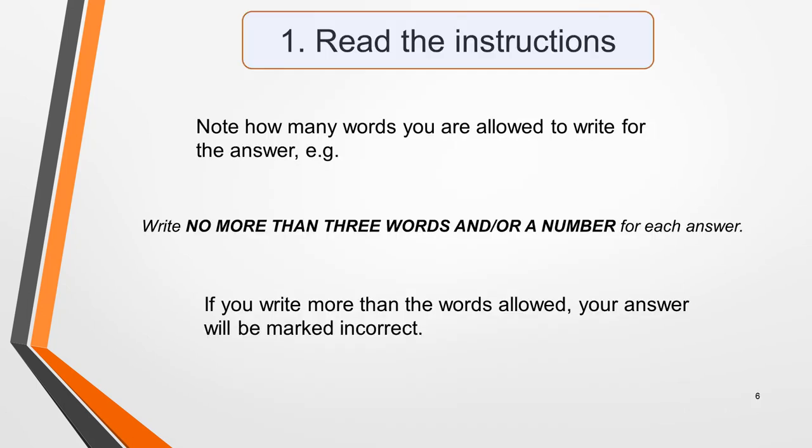You'll have a short time to prepare before the speakers begin talking. Use this time to familiarise yourself with the question and focus your mind on what you need to listen out for. First, read the instructions carefully, paying particular attention to how many words you're allowed to write for the answer. The instructions for our sample questions state that you must write no more than three words and/or a number for each answer. If you write more than three words, your answer will be marked incorrect, even if the information you give is correct. Don't lose marks over silly mistakes like this. The answers to note completion questions will usually be factual information such as names, dates, places, times and phone numbers.